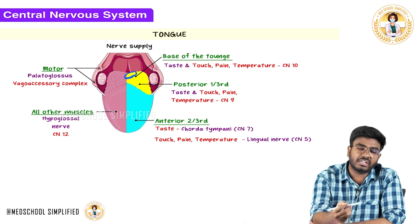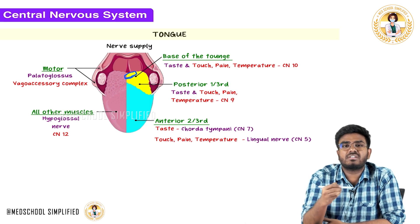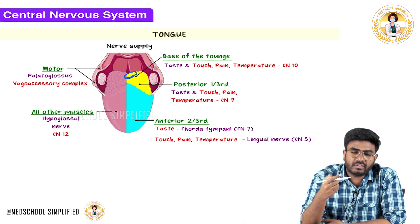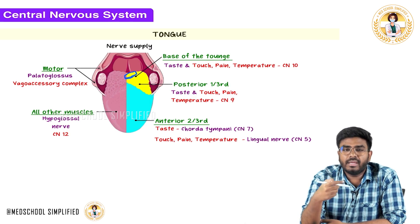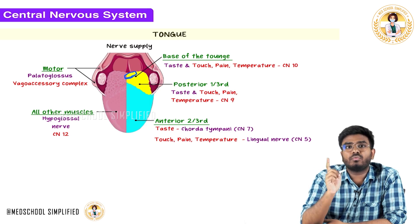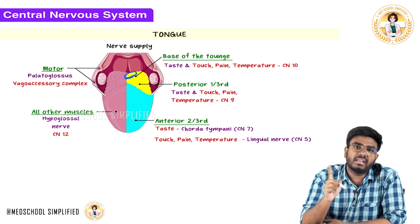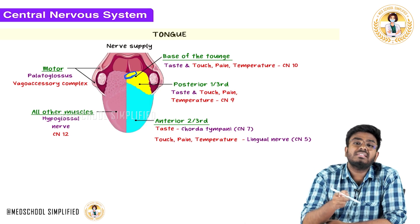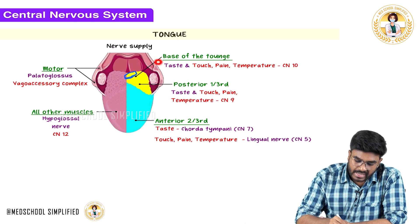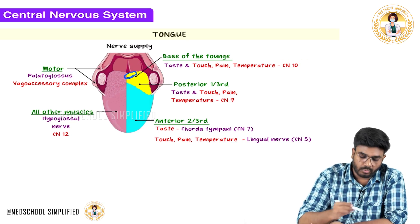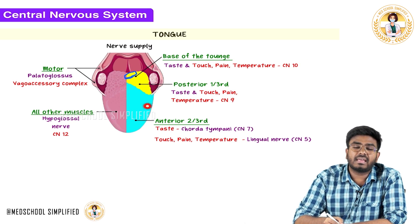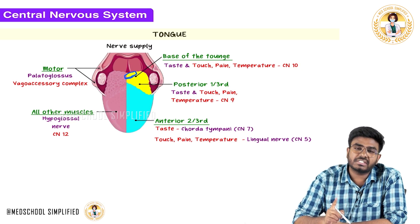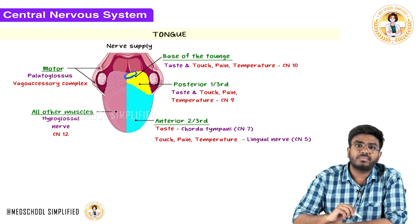To summarize taste sensation: from the anterior two-thirds it is carried by the 7th cranial nerve, while from the posterior one-third and base of the tongue it is carried by the 9th and 10th cranial nerves. The 9th and 10th cranial nerves carry both touch, pain, temperature and taste. The only difference is in the anterior two-thirds, where touch, pain, temperature are carried by the 5th cranial nerve and taste by the 7th cranial nerve.